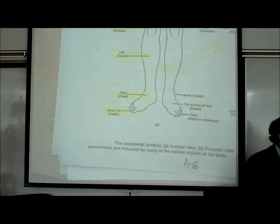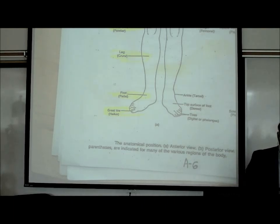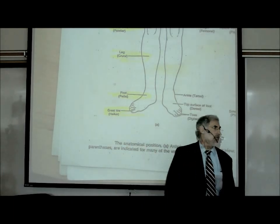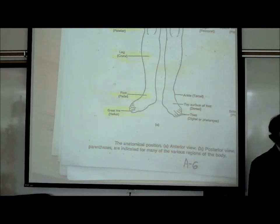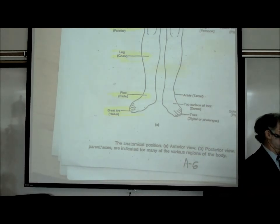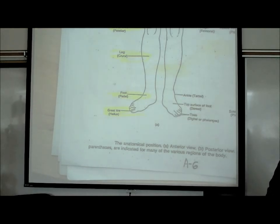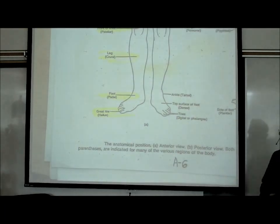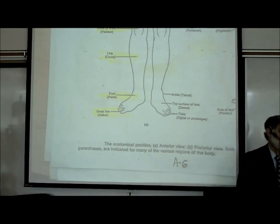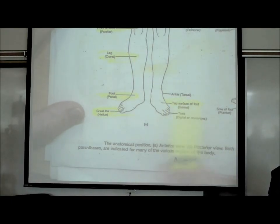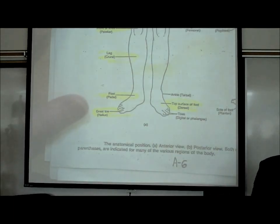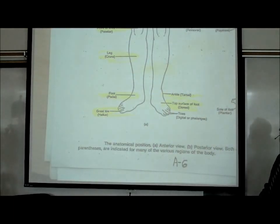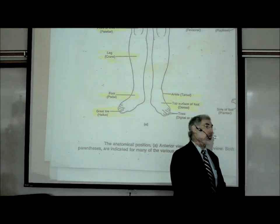Hallux is the big toe; pollux is the thumb; palmar and volar mean palm. Toes are also called digits or phalanges — the same term as fingers. The top surface of the foot is the dorsal or dorsum. The ankle is tarsal — don't confuse tarsal ankle with carpal wrist. The groin is inguinal — we'll learn about inguinal hernias later. The belly button is umbilical.